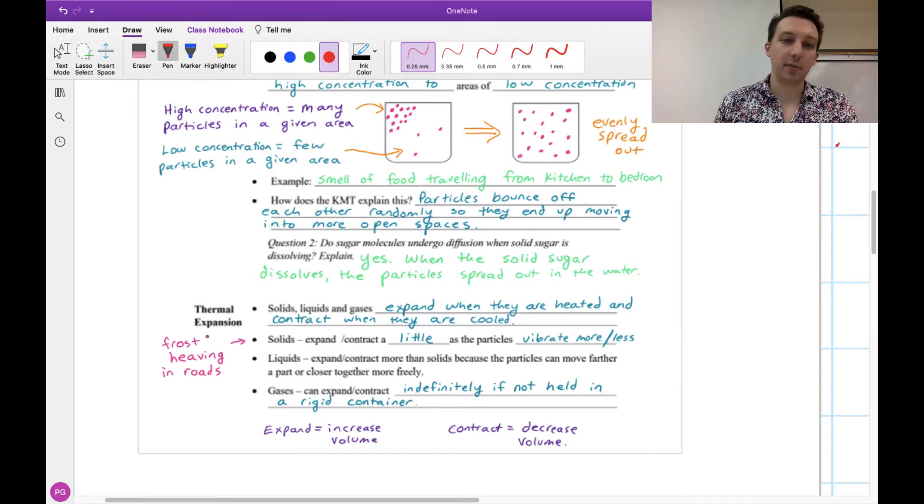The next thing we're going to talk about is thermal expansion. So this is where solids, liquids, or even gases can expand when they are heated and contract when they are cooled. By expand, we mean increase in volume. Contract means decrease in volume. Now solids do this a little bit. They expand and contract a little bit as the particles vibrate more or less. If they're not vibrating very much, they can be right next to each other. If they're vibrating a little bit more, there can be a larger distance. So the thing can actually expand or contract a little bit.